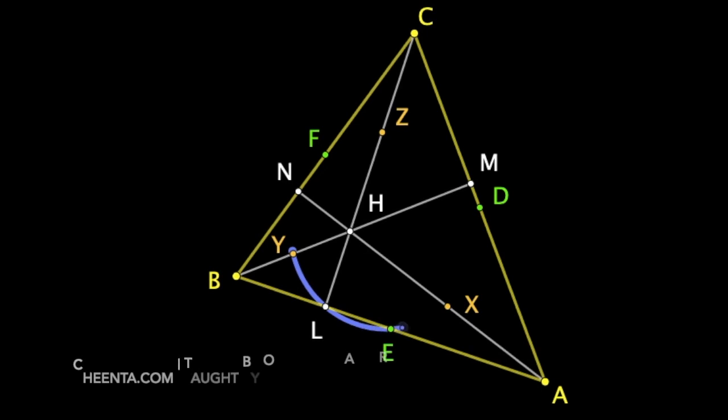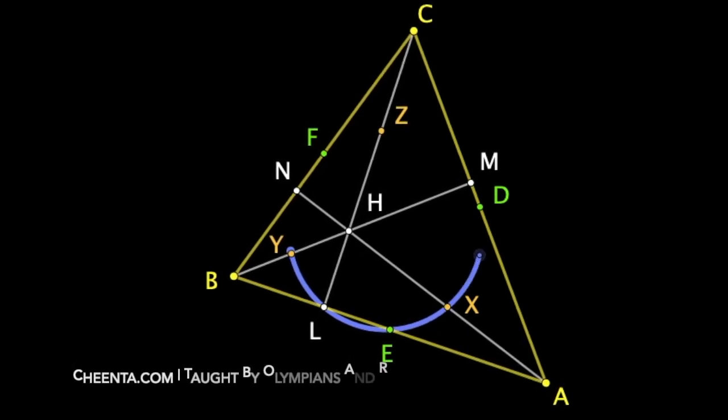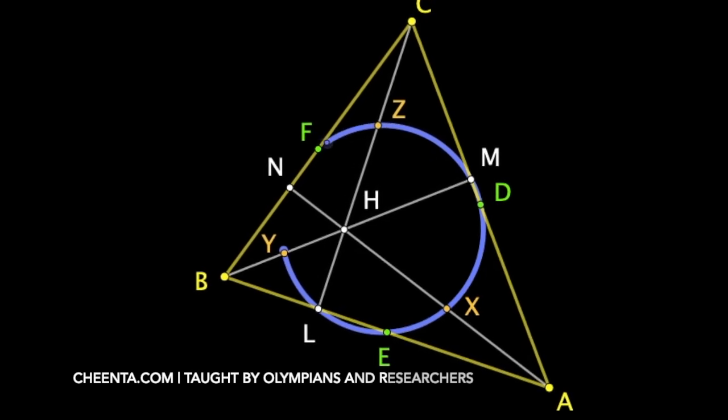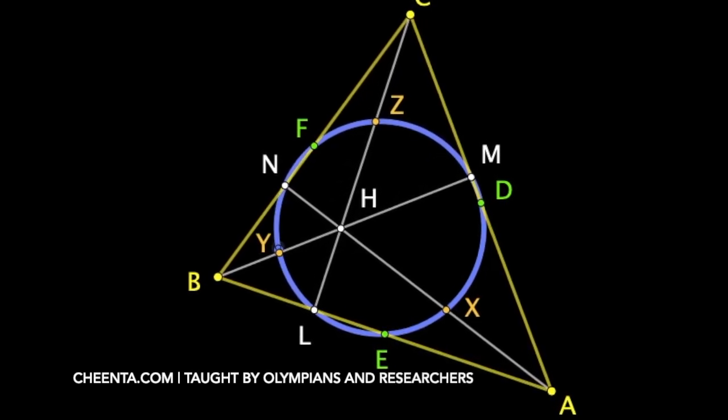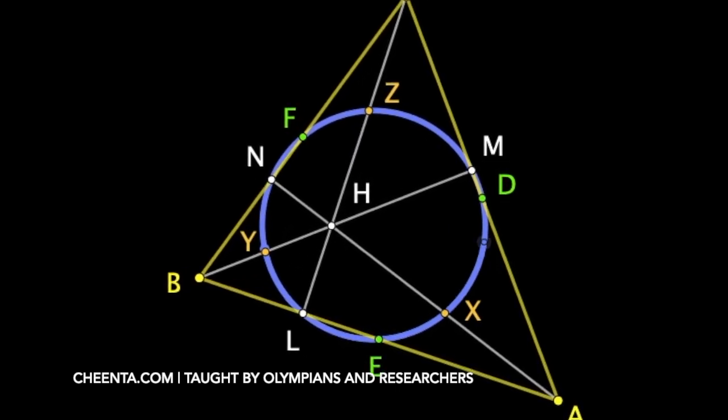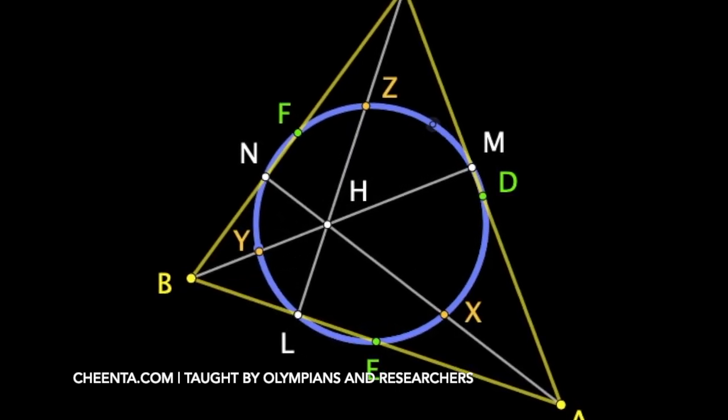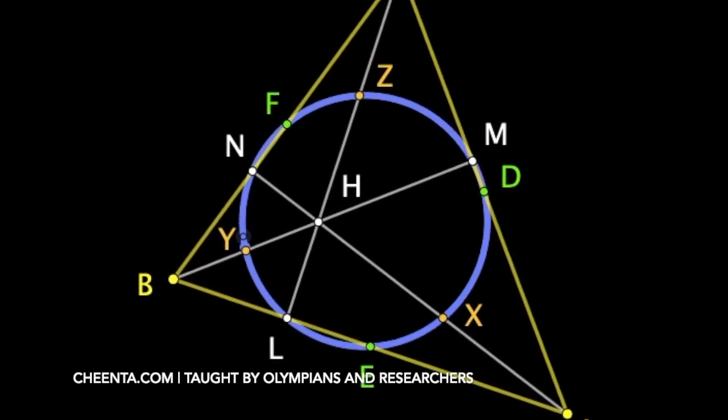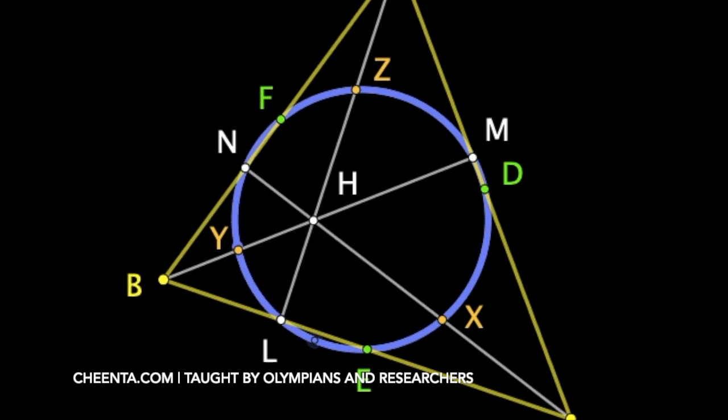We have found all the nine points now. And the circle passing through all of these nine points, that is the three midpoints, the three feet of the altitudes and the midpoints of AH, BH and CH. These all nine points lie on the same circle and that circle is known as the nine-point circle.